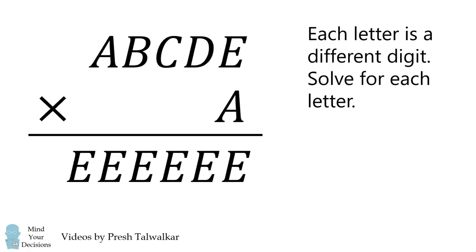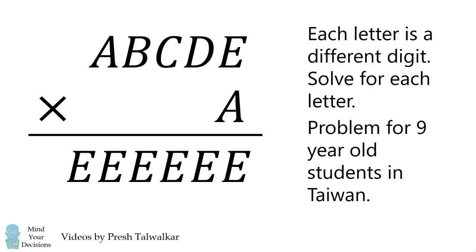Each letter is a different digit. The challenge is to solve for each letter. This problem was given to nine-year-old students in Taiwan and it was considered so hard that it made the television news.